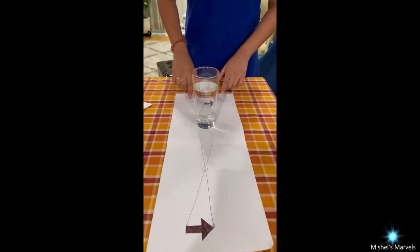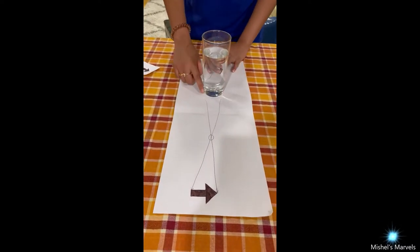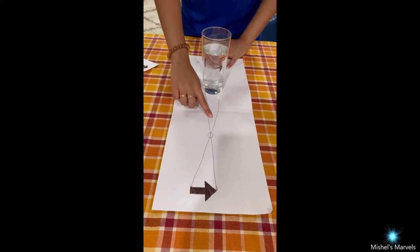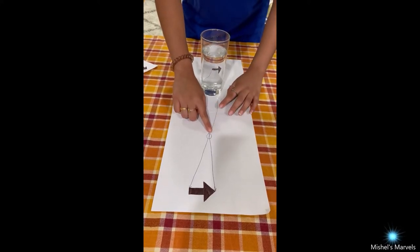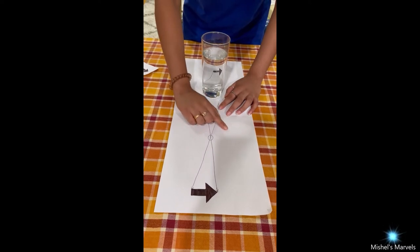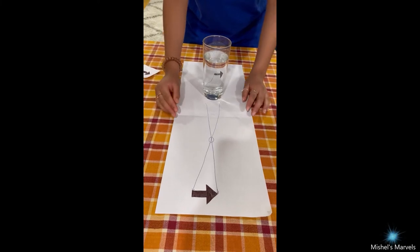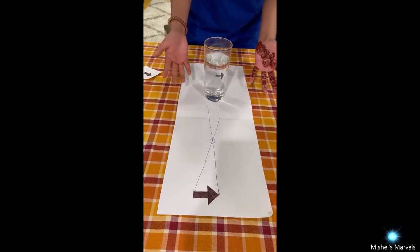The reason why this happens is because water acts as a magnifying glass and it bends light towards a focal point. Beyond the focal point, light rays that were bent past each other and light that was on the right is now on the left, and the left is on the right, making the arrow appear to be reversed.